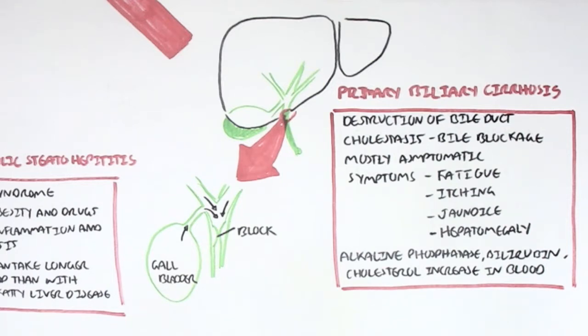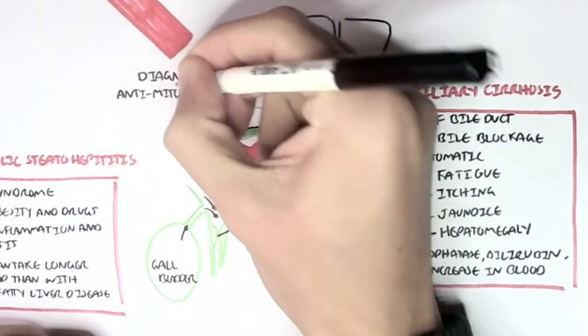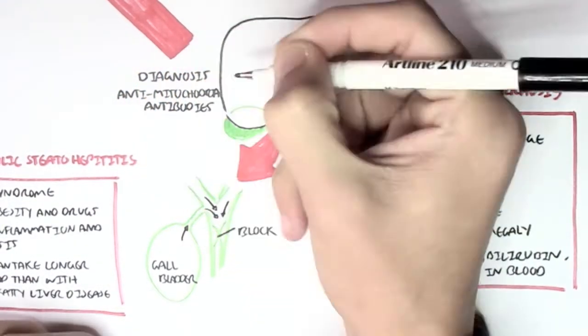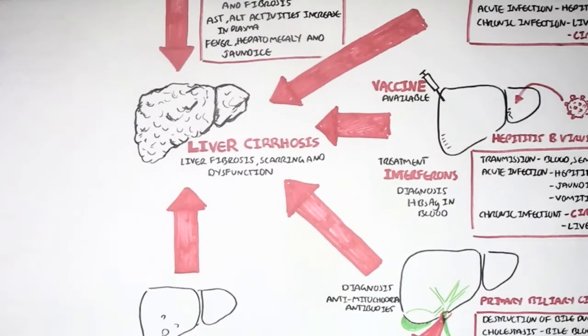Primary biliary cirrhosis is known to be an autoimmune disease because the body essentially attacks its own biliary tract and bile duct. You diagnose it with antimitochondrial antibodies towards this bile duct.